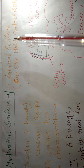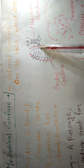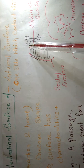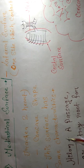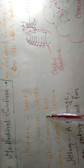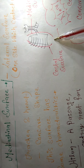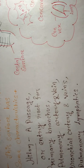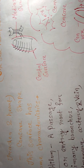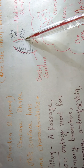The mediastinal surface is one side of the lungs that is in contact with the heart and trachea, and it has a concave shape. A characteristic feature of the mediastinal surface is called the hilum — the portion where the trachea enters inside the lungs is called the hilum.